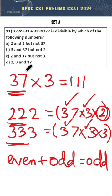Therefore, this number is divisible by 3 and 37 but not 2. Option B is the right answer.